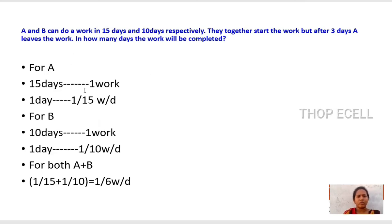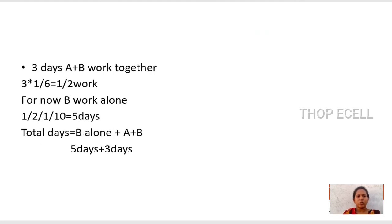For A, 15 days equals one work and 1 day equals 1/15 work per day. We must be very careful while dividing work and days. For B, it is the same: 1/10 work per day. For both A plus B, we get 1/6 by adding. In the question, they together start the work but after 3 days A leaves. So for 3 days A plus B work together: 3 times 1/6 equals 1/2 work. Now B works alone. The remaining work is 1/2 divided by 1/10, which equals 5 days. Total number of days equals B alone plus A plus B work done, so total days is 8 days, 5 plus 3.